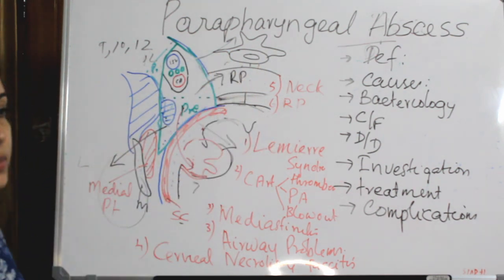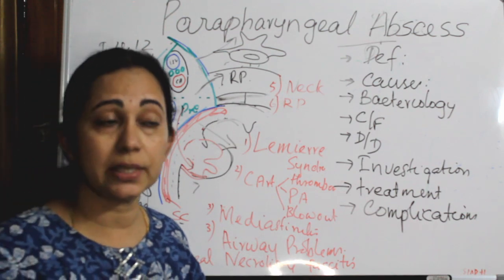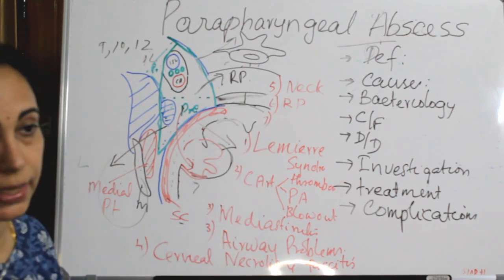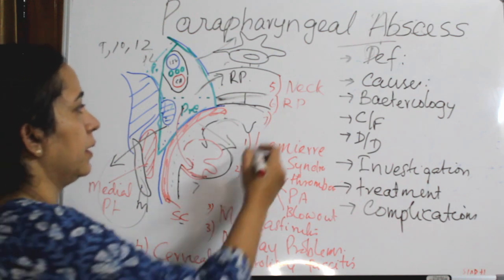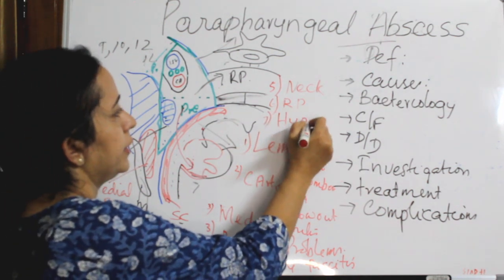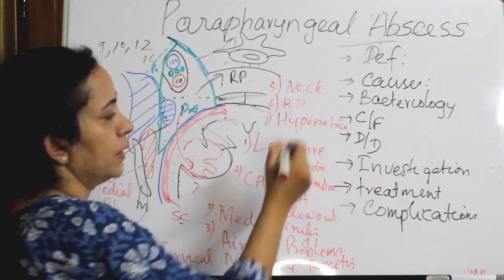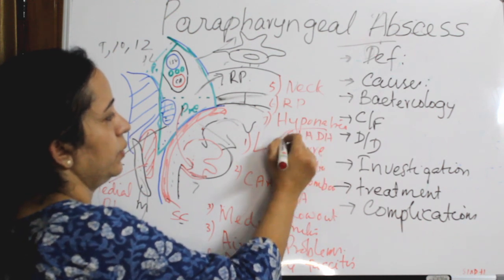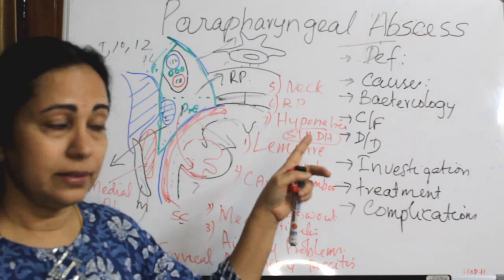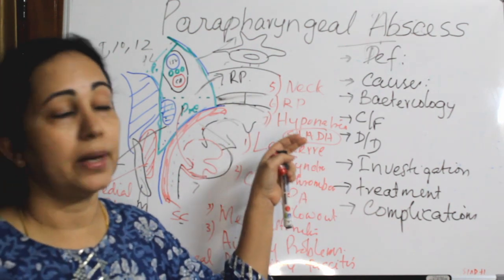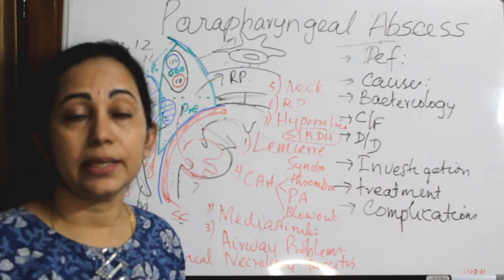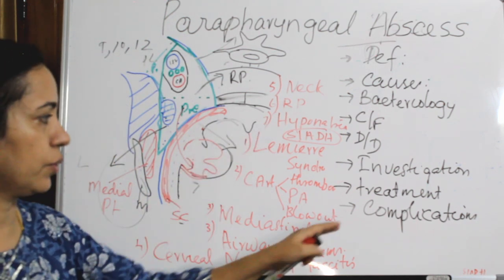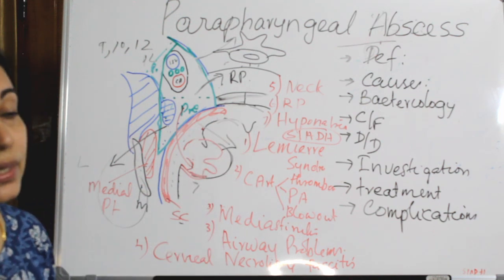In children with parapharyngeal abscess, a unique complication is symptomatic hyponatremia caused by SIADH (Syndrome of Inappropriate Antidiuretic Hormone secretion). This can cause seizures in affected children. These represent the full spectrum of complications of parapharyngeal abscess.